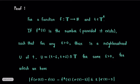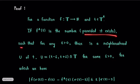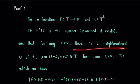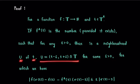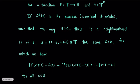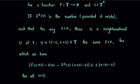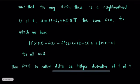Firstly, we will recall the definition of the delta derivative of a function in time scales. For a function f from time scale T to R and a point t belonging to T^k, f^Δ(t) is the number, provided it exists, such that for any ε > 0 there is a neighborhood U of t of this form, for some δ > 0, for which the condition |f(σ(t)) − f(s) − f^Δ(t)·(σ(t) − s)| ≤ ε·|σ(t) − s| holds for all s in U. This number f^Δ(t) is called the delta or Hilger derivative of f on T.